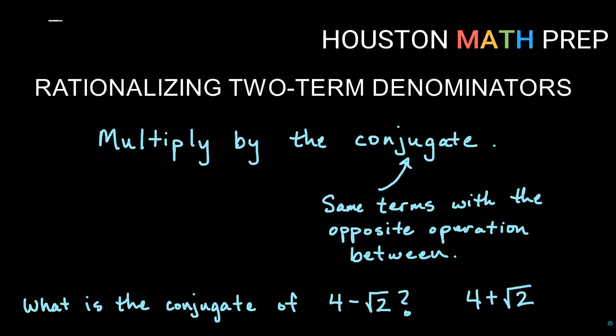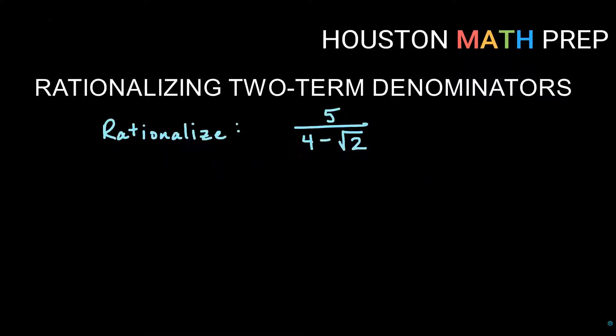If you're just looking for rationalizing a single term denominator, check out the other video for that. Our first example here: notice I've got my four minus root two. We've already said what the conjugate is, so we're going to rationalize the expression five over four minus root two. We've already said what the conjugate is going to be — we are going to multiply by four plus root two.